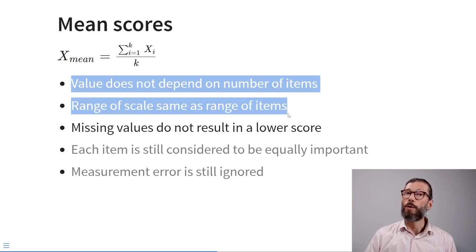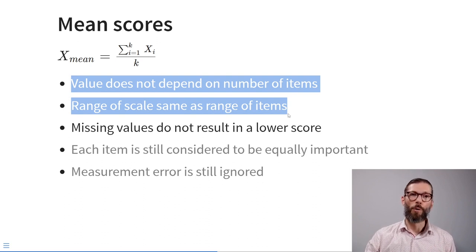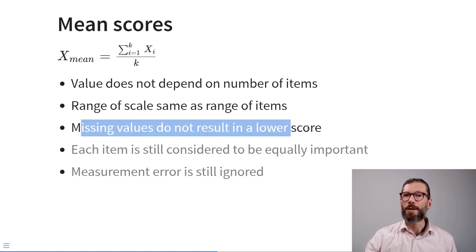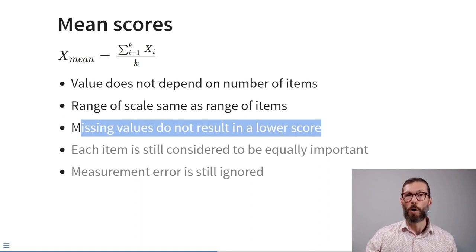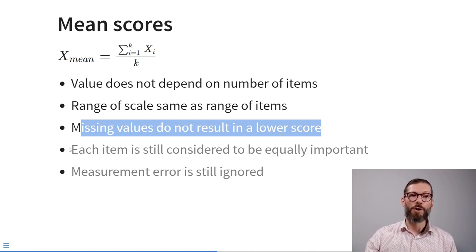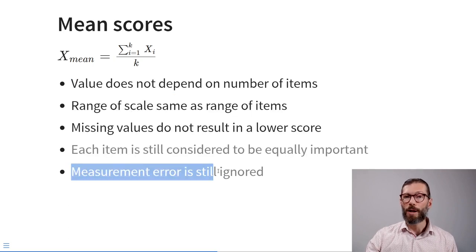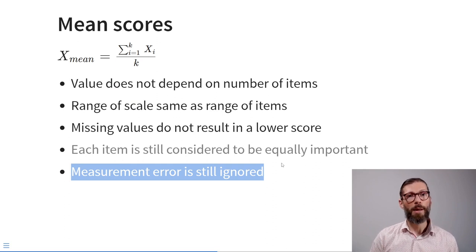The advantage of the mean score is that its range no longer depends on the number of items — if all items are on a 5-point scale, the mean score will also fall on that 5-point scale. Furthermore, dividing by the number of valid items means missing values no longer result in a lower score. However, two remaining limitations are that each item is still considered equally important and measurement error is still ignored.